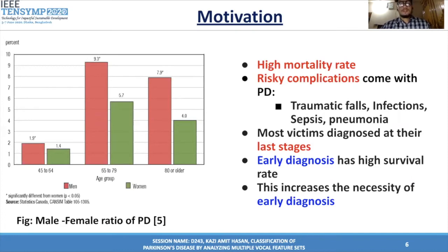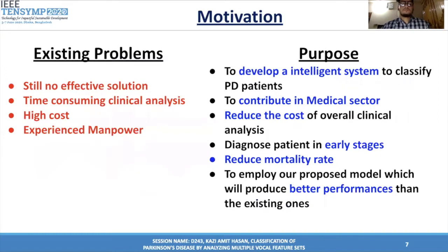This increases the necessity of early PD diagnosis. There are existing problems — still no effective solution for PD has been discovered, clinical analyses are very time-consuming, have a very high cost, and require experienced manpower. So the purpose of our research is to develop an intelligent system that can classify PD patients, contribute to the medical sector, reduce the cost of overall clinical analysis, diagnose patients in early stages, and reduce the mortality rate. We also want our proposed model to produce better performance than existing ones.